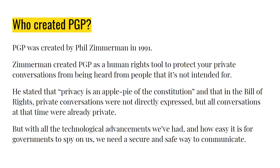Back then, pretty much all conversations were private. If you wanted to have a conversation with a family member, friend, or co-worker, you just walked outside — you know, go behind a barn or something. It was a lot simpler back then because you didn't have all this technology able to spy on you 24/7, like our phones, computers, Amazon Alexa, and all that. You can see why privacy wasn't explicitly put in the Bill of Rights, but with the technology advancements we've had, it's become easy for governments to spy on us.